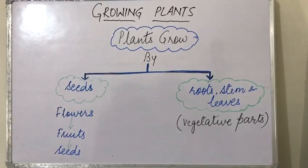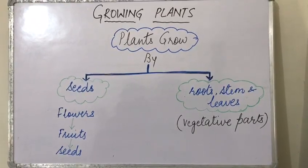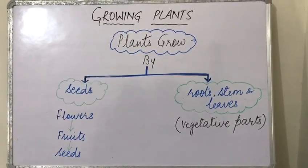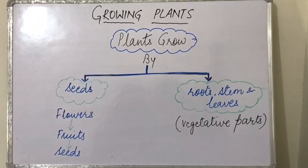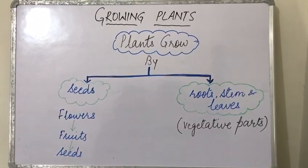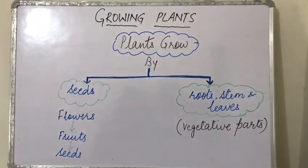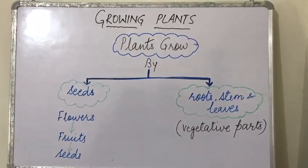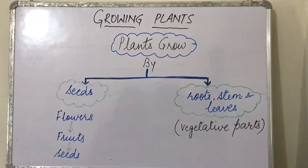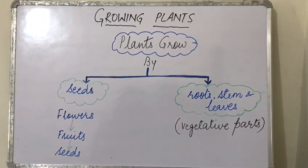For seeds to develop, most of the plants have to be flowering plants. First the flower changes into a fruit, and most of the fruits they bear seeds.